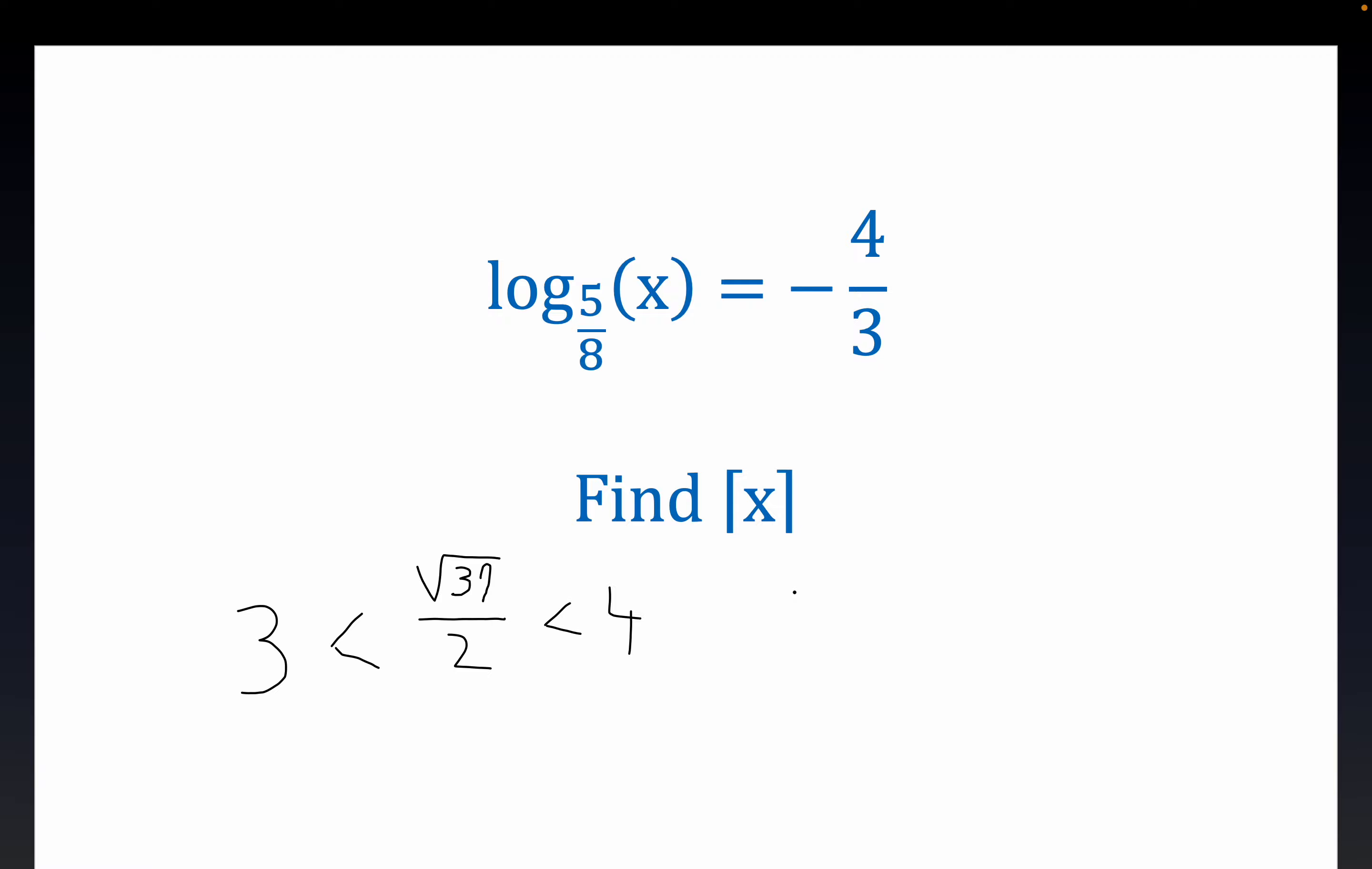Now the ceiling of that number, and I forget what, these are square brackets. They're different than the floor function, except you're just going in the opposite direction. The ceiling of a number is the least integer greater than the number. So the ceiling of the square root of 37 over 2, since this number has been shown to be a number trapped between 3 and 4, is equal to 4.